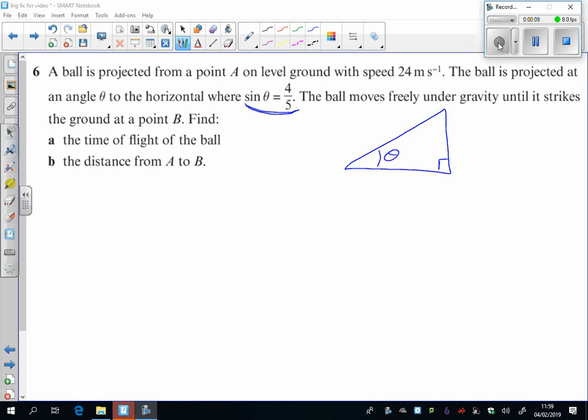You could just find out what the angle is, or you could use a little triangle there. The opposite over hypotenuse is 4 fifths, and so this little bit is 3 here.